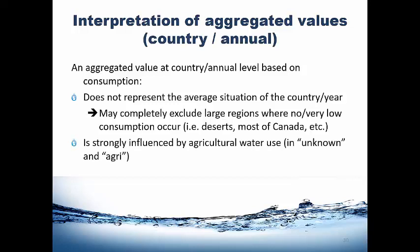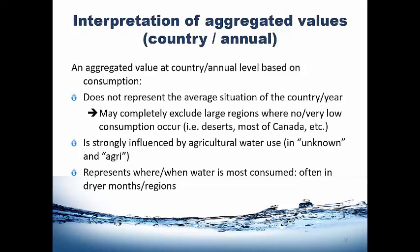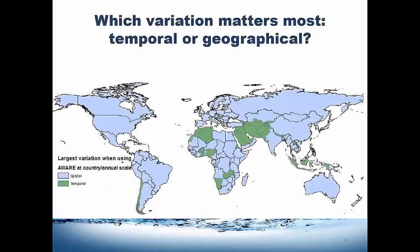The value is strongly influenced by agricultural water use if you use the unknown or agri value. We provided three averages: non-agri, agri, and unknown — for use in background databases. Irrigation is a big contributor. These averages really represent the regions where and when water is most consumed, often in drier months and drier regions. If the value doesn't look right, it's important to look closer — at the monthly scale or at the watershed scale. We have provided information about in which region it's more relevant to look at spatial versus temporal variation.